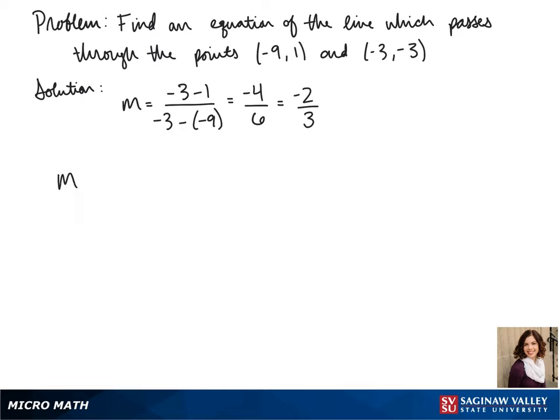So we have our slope of negative 2 over 3 and we choose a point, (-9, 1), and we can plug those into the point-slope formula. So we get y minus 1 equals negative 2 thirds times x plus 9.